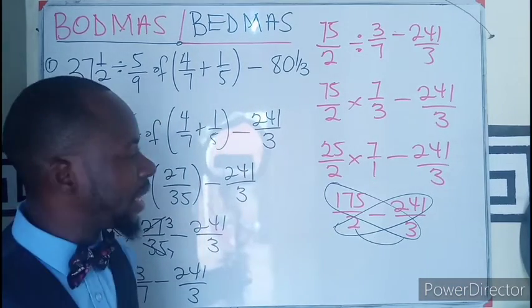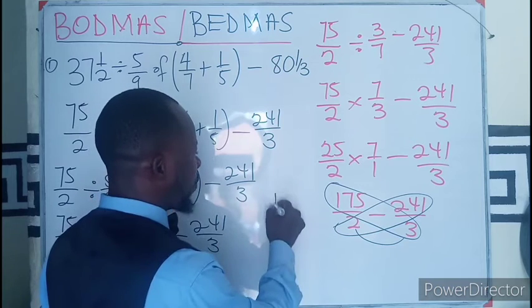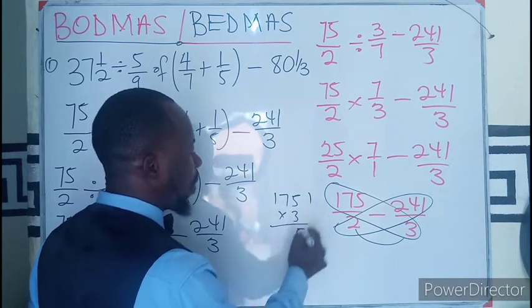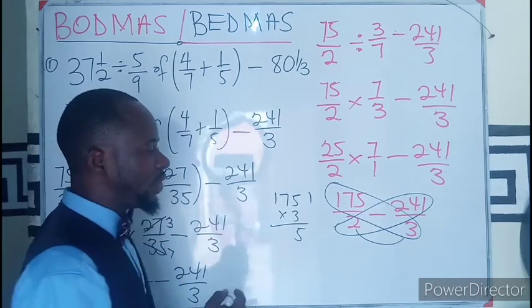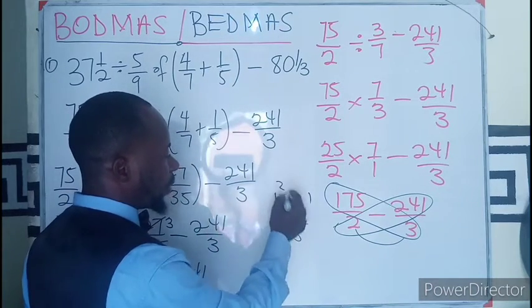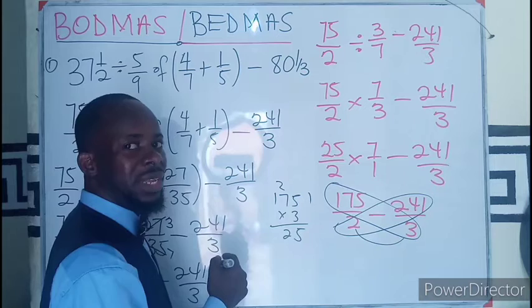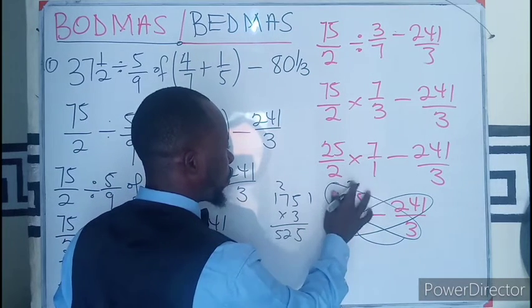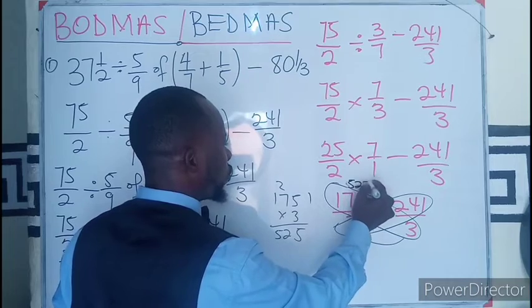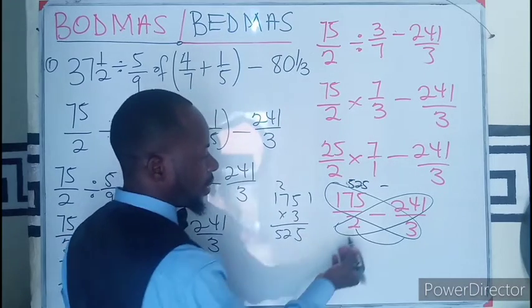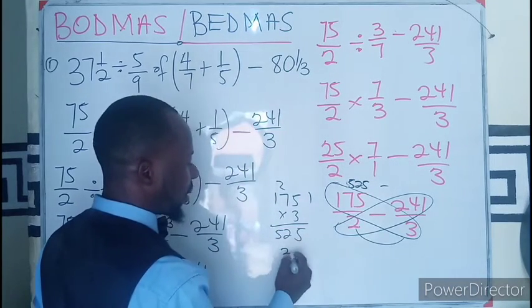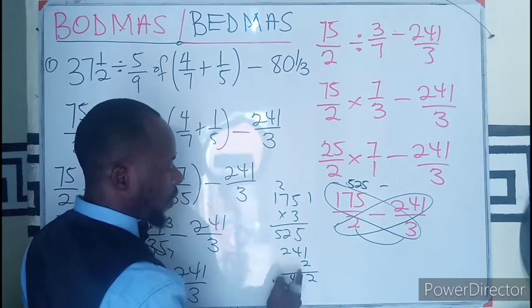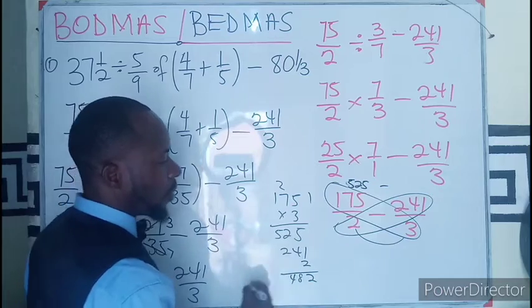So we are going to have 175 by 3. 15, 1, this is going to be 21, so 22. Carry 2, this is going to be 3, so 5. So we have 525 minus this is also going to multiply 241 by 2, 2, 8, 4, this times this is 8, 4. So 482, then this will multiply to give us 6.